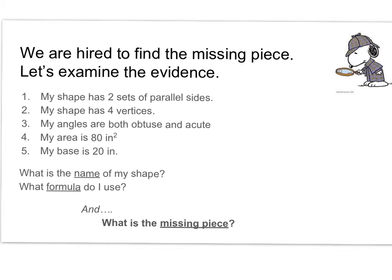Let's examine the evidence. My shape has two sets of parallel sides. My shape has four vertices. My angles are both obtuse and acute. The area is 80 inches squared. My base is 20 inches. From this evidence, I should be able to say what the name of my shape is and which formula do I use. And then I can find the missing piece.